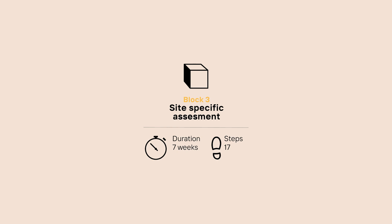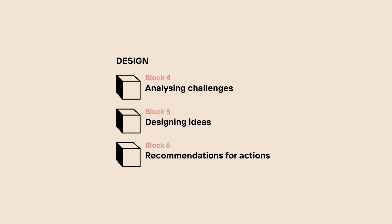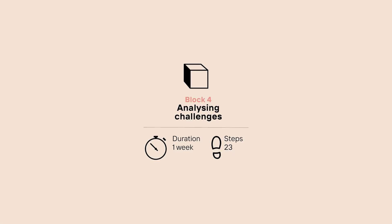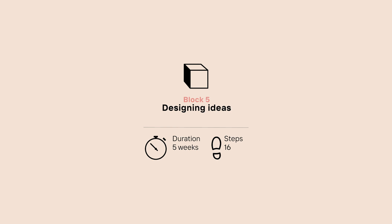Phase 2 includes Block 4, Analyzing Challenges — formalizes brainstorming and is particularly suitable when professionals are working together with non-professionals. Block 5, Designing Ideas — turns the ideas into designs for the new public space using a participatory digital tool, the computer game Minecraft. Block 6, Recommendations for Action — prioritizes among the designs, crafts guidelines, and develops recommendations in multi-stakeholder groups.